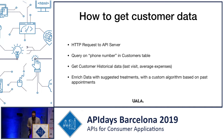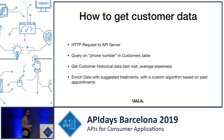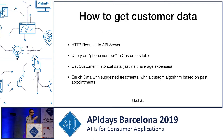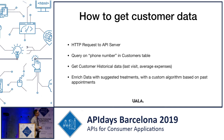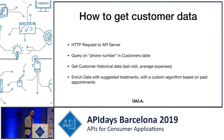Now that we have the phone number, the cube makes an HTTP request to our API server. We expose a customer endpoint, then run a simple query on the customers table to identify exactly who the customer is. Then we get the historical data about the customer, and with a custom algorithm based on past appointments, we try to guess what treatment the customer might be interested in.